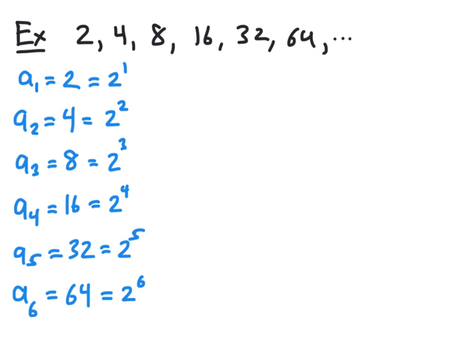And so, by looking at this pattern, we can deduce that the nth term, A sub n, will be the number 2 raised to the nth power. And so, this will serve as our formula for the general term or the nth term of our sequence.